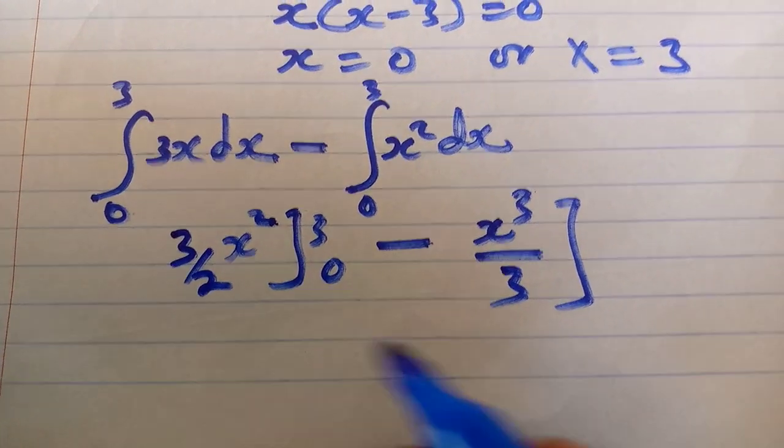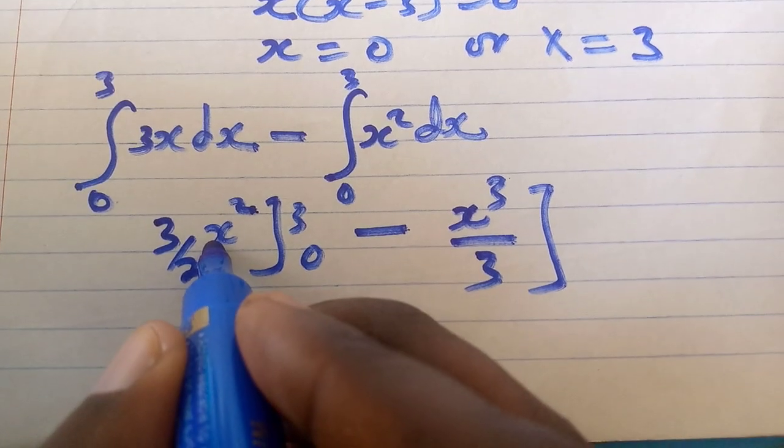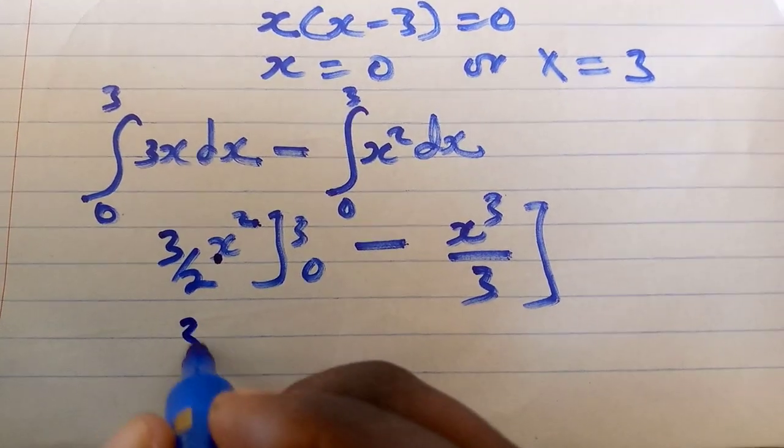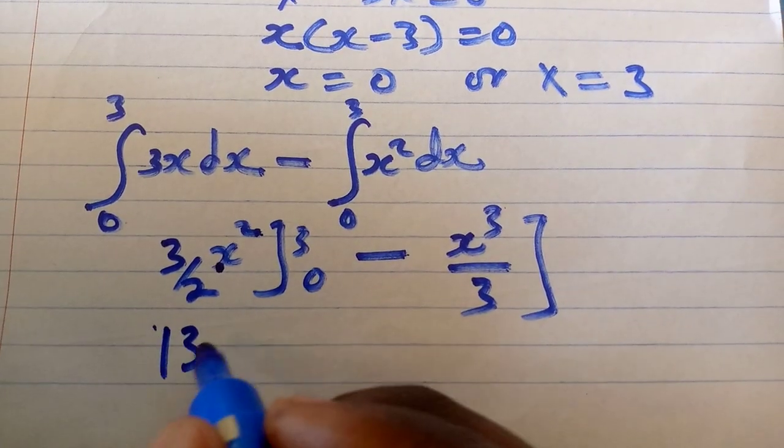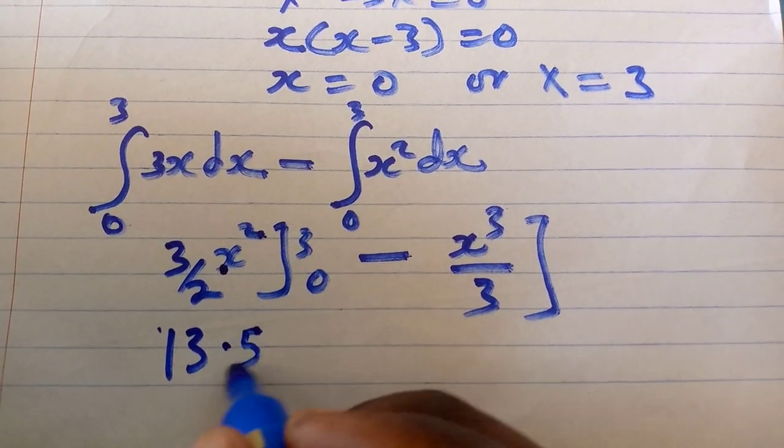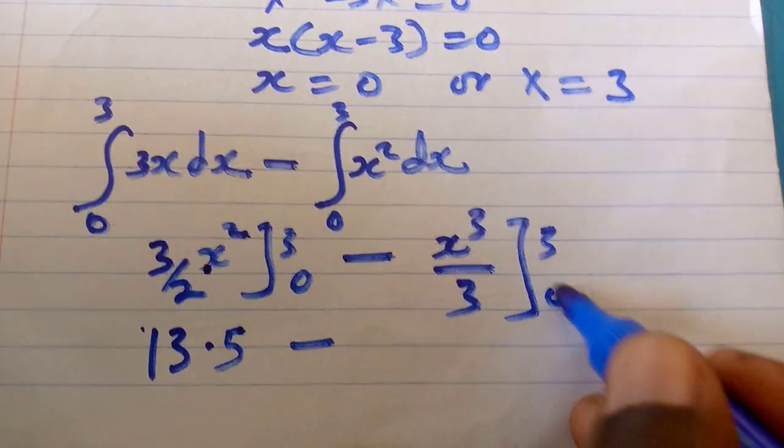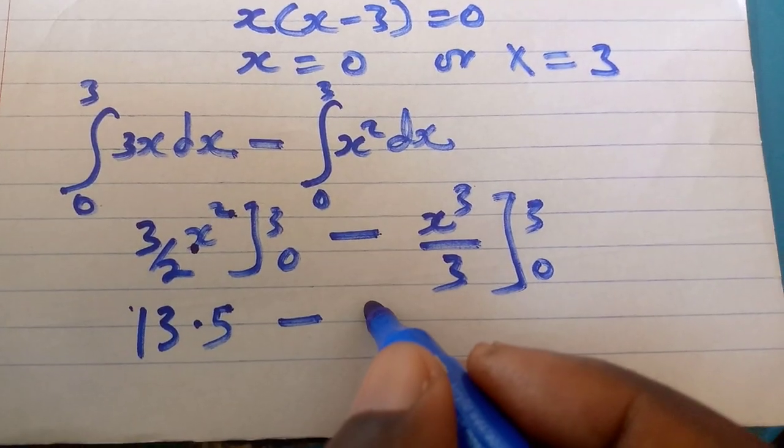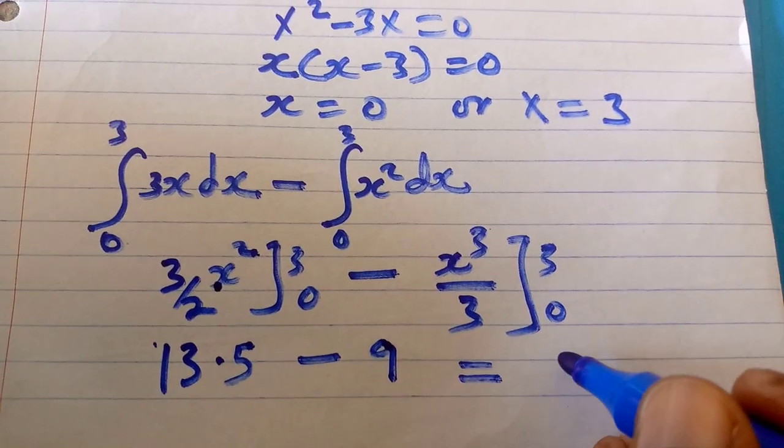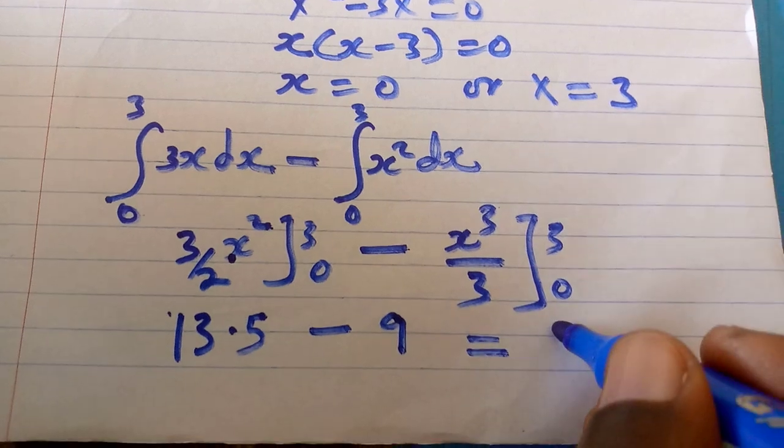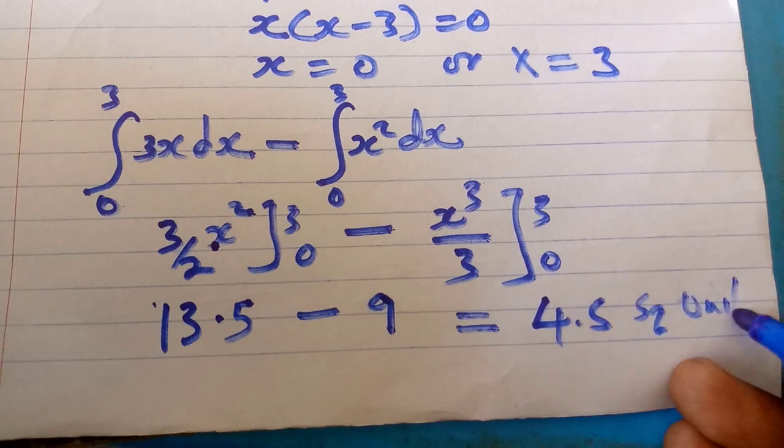So when I do that and substitute where 3 here, I'm going to get 13 and a half. If you substitute 3 here, you're going to get 9. And that means my answer will be 4 and a half square units. So that is what I'm getting using the integration method.